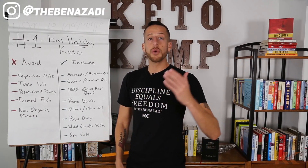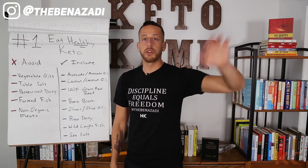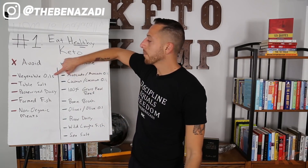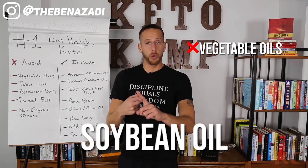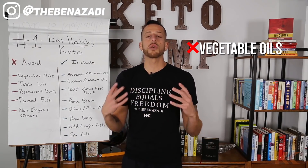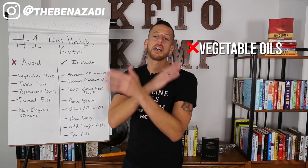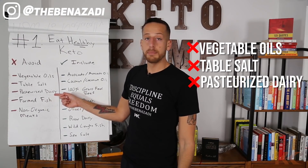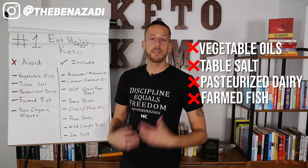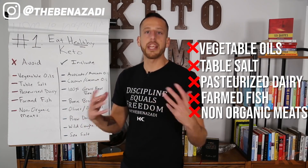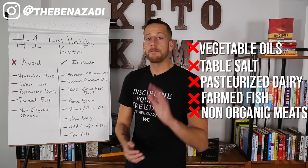The number one rule when following a keto diet is to follow a clean keto diet, because if you're doing dirty keto, you're still going to have inflammation and still be dealing with symptoms. Dirty keto foods to avoid include vegetable oils — soybean oil, safflower oil, cottonseed oil, peanut oil, grapeseed oil, canola oil, corn oil — any of these industrial seed oils. Also avoid table salt, pasteurized dairy including milk and cheese, farm-raised fish which is high in PCBs, and non-organic meats from caged animals pumped full of antibiotics.